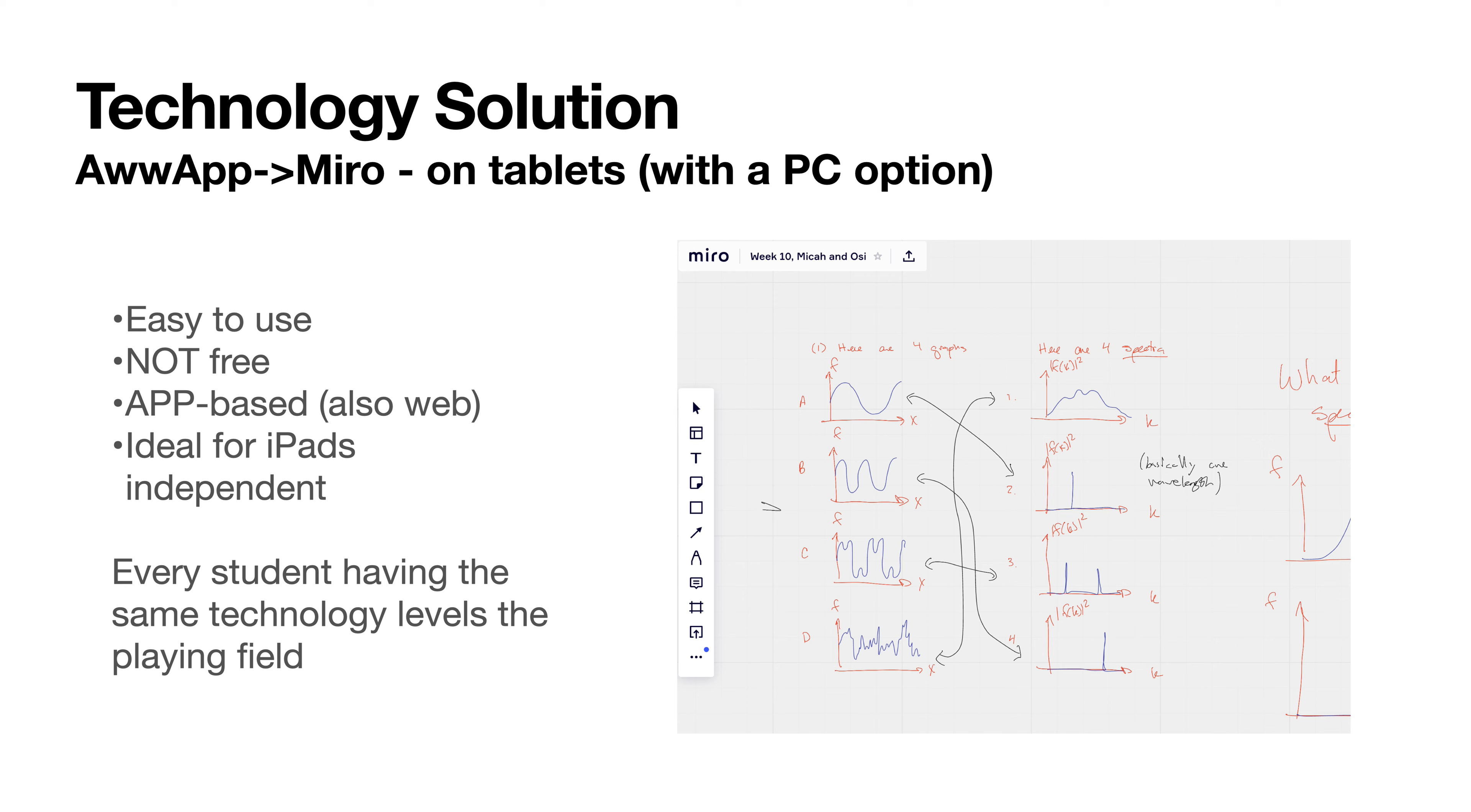Moving to the tablets allowed us to look for another solution, half motivated by wanting something easier to use on tablets that might be app-based rather than web-based. AwwApp was bought by another technological solution called Miro, which has an app associated with it, making it ideal for iPads. We didn't have to worry about whether every student had an iPad because we provided them. The app-based interface was really great.